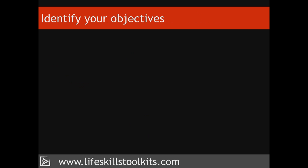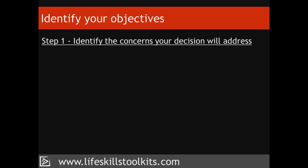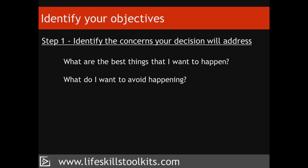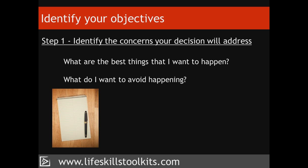Here's the five-step process to help you identify your decision objectives. Step 1: Identify the concerns your decision will address. This step involves finding as many answers as you can to the following questions: What are the best things that I want to happen? What do I want to avoid happening? Spend as much time as you need to write down as many answers as you can.